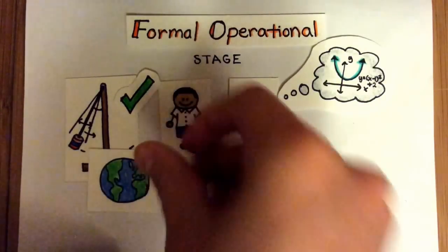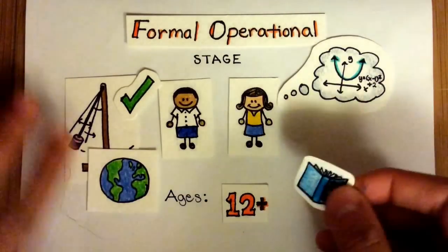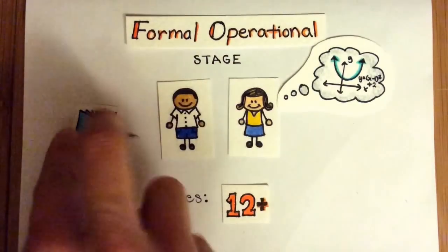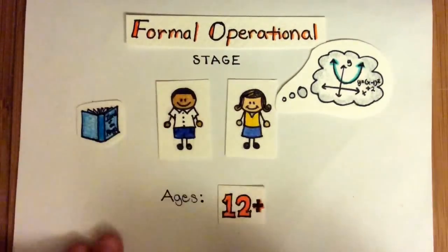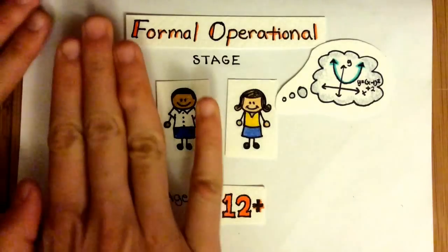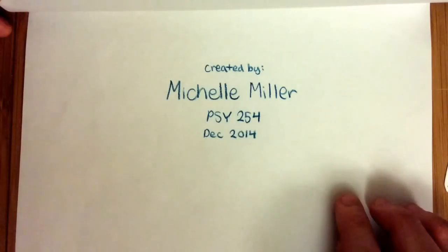They are also able to engage in deeper philosophical thinking about morality, truth, and alternatives to our current reality. This development has often been used to explain why adolescents frequently cultivate an interest in science fiction, which spurs its readers to think about other possible worlds in comparison to our own. This video was created by Michelle Miller for Psych254 Developmental Psychology. Thank you for watching!